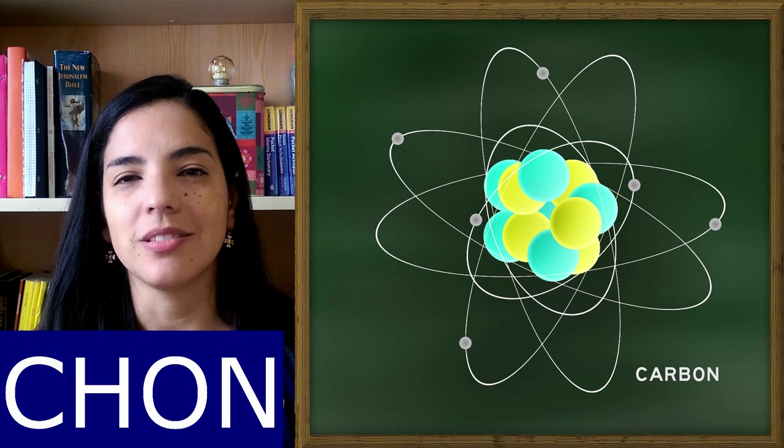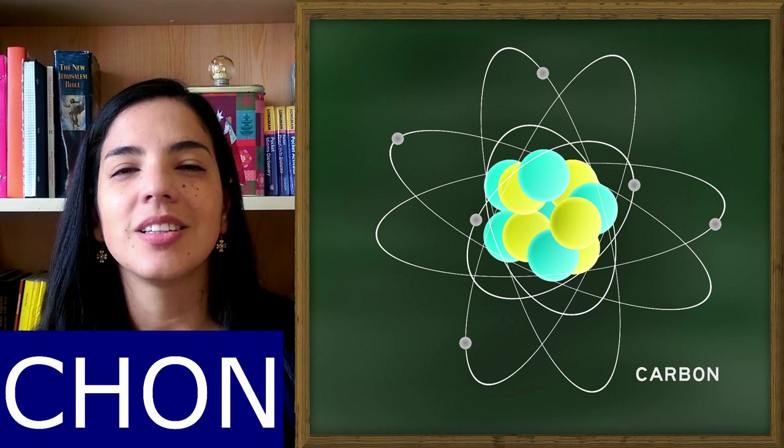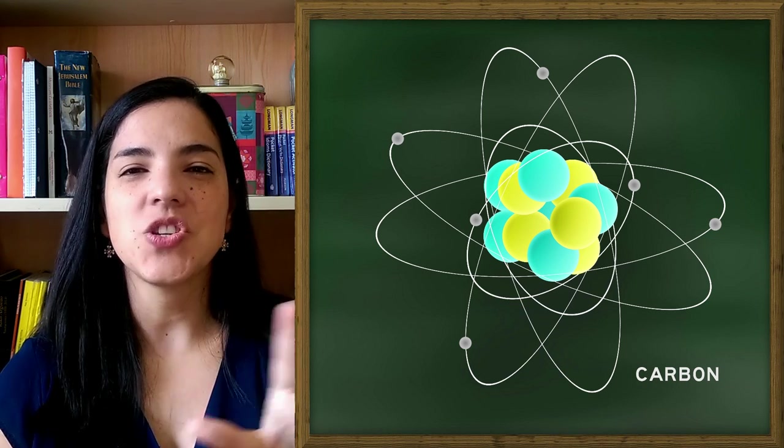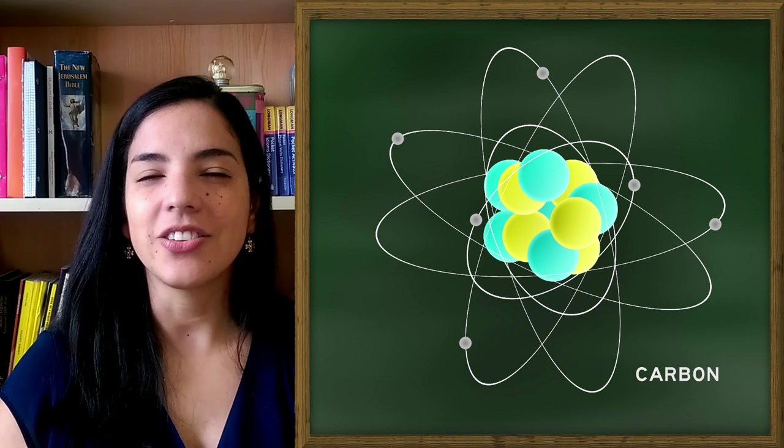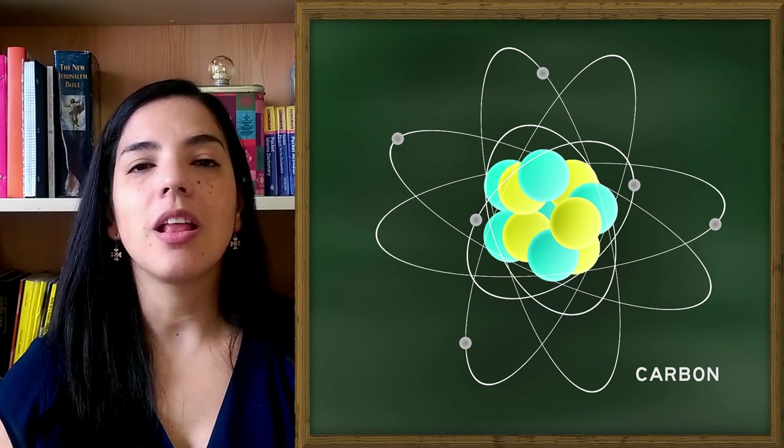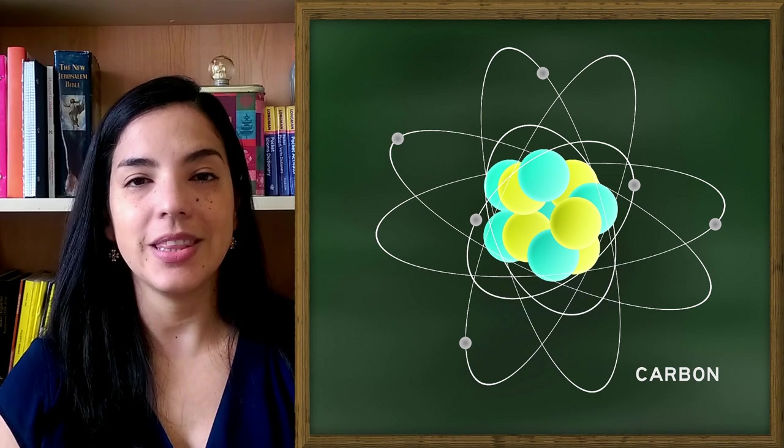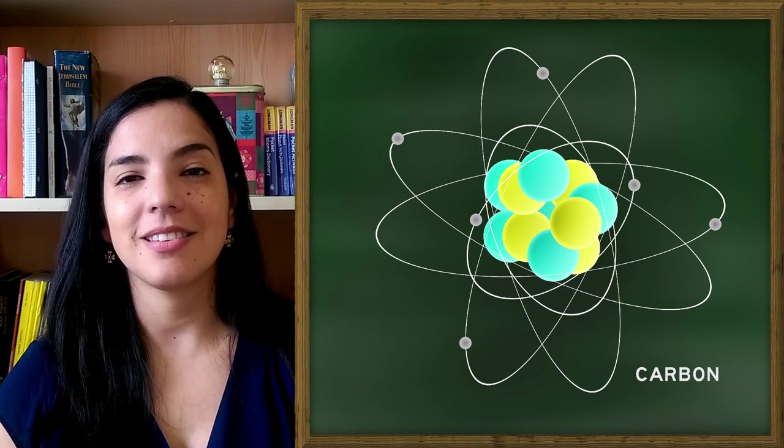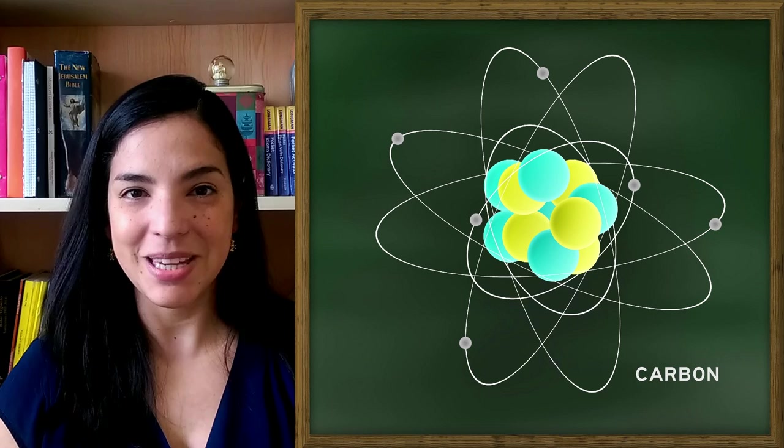C-H-O-N. Carbon, hydrogen, oxygen, and nitrogen. These are the elements that make up all living things. With these, you get any living thing. It's amazing.